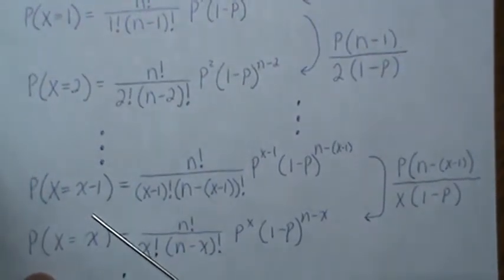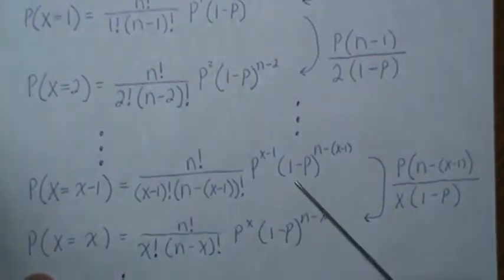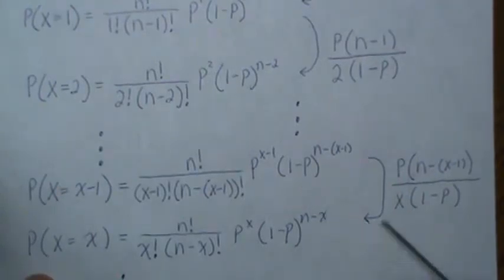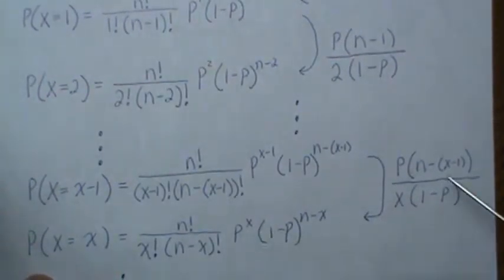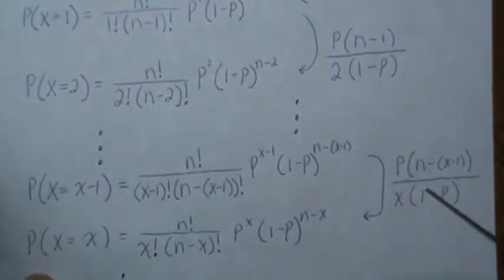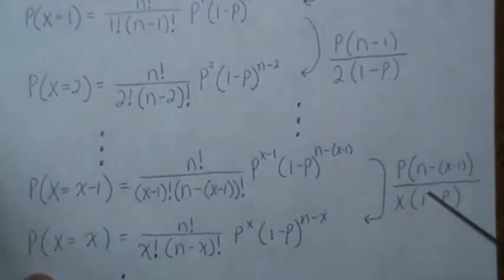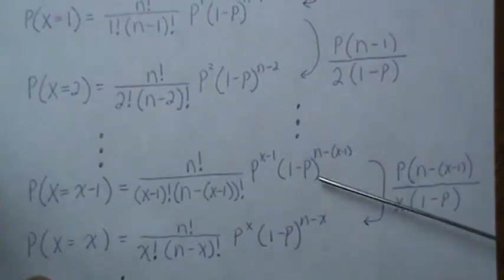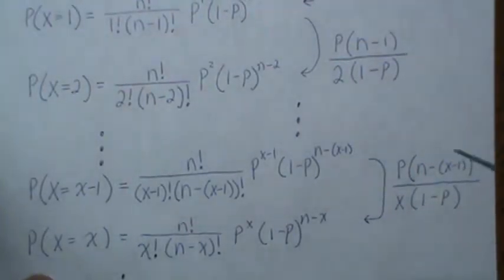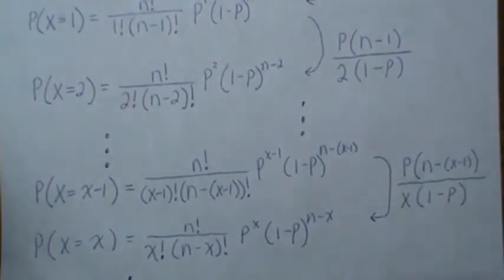So generically, if we're at x minus 1, here is the PDF, and then if we multiply this PDF by this number, we get this. So if this number is more than 1, this goes up. If it equals 1, we stay the same. If it's less than 1, it goes down. So this is generic, this is what we have to find.